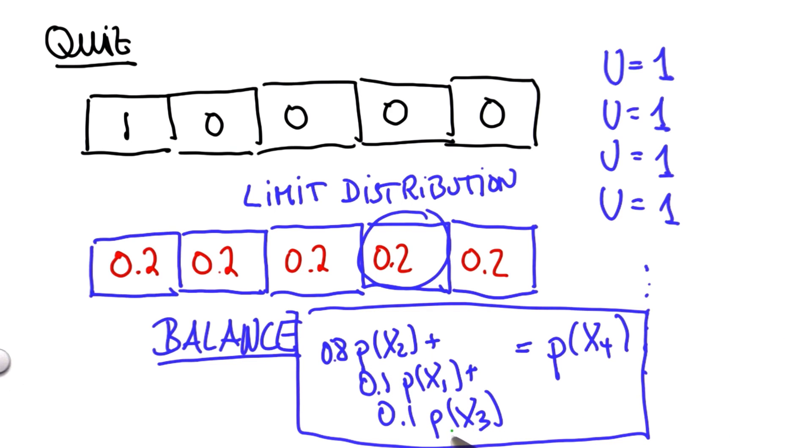So if you plug in 0.2 over here, 0.2 over here, 0.2 over here, we get 1 times 0.2, and that's 0.2 on the right side. So clearly, those points two over here meet the balance that is necessary to define a valid solution in the limit.